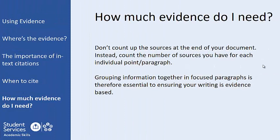When asking themselves how much evidence should be cited in the writing, students will often count up the total number of sources for their entire essay to decide if they have enough evidence. However, a much more effective way of producing high quality writing is to write and clearly define paragraphs, each of which bring together a number of sources to argue a certain point. So rather than asking yourself 'do I have enough sources in this essay?', you should instead ask yourself 'do I have enough evidence in each paragraph?'